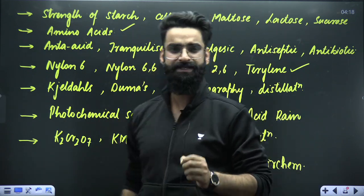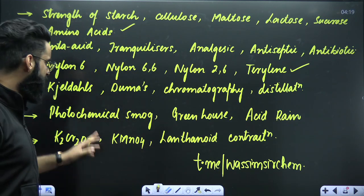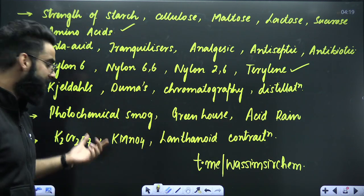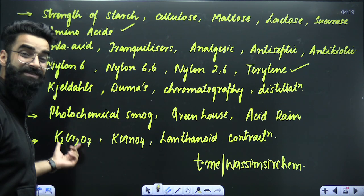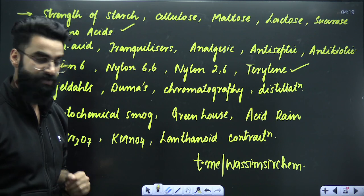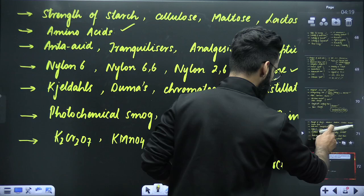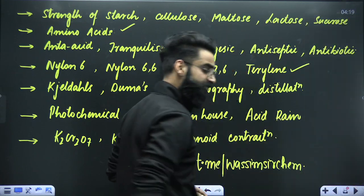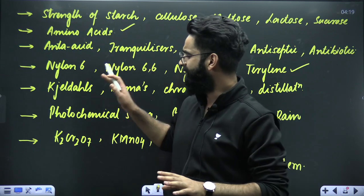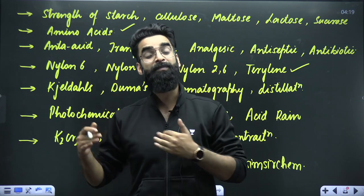Other important easy-kill topics from which questions are asked every year include: photochemical smog, the greenhouse effect, and acid rain. You also have compounds K2Cr2O7 and KMnO4 — their structures and reactions — and lanthanoid contraction as well. These were some very, very important topics I would want all of you to do on priority, as questions have been frequently coming from these when you look at PYQs.